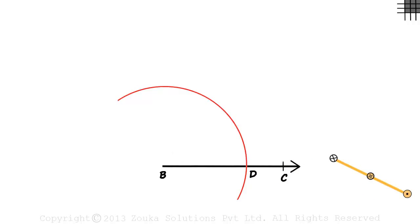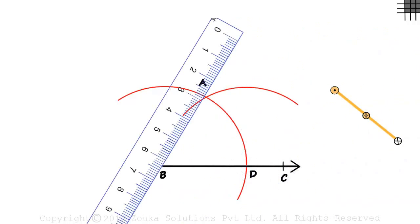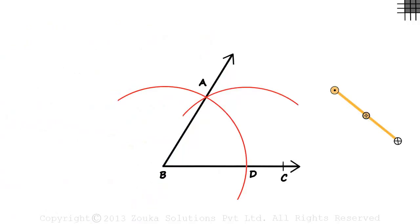In the next step, without changing the width of the compass, we keep it at point D and draw an arc intersecting the previous arc at point A. Then we join points B and A which gives us ray BA. The measure of angle ABC will be 60 degrees.